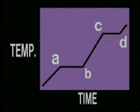On this graph of time versus temperature, the first segment represents heating of the solid. At point A, the solid melts. The temperature remains constant while melting occurs.